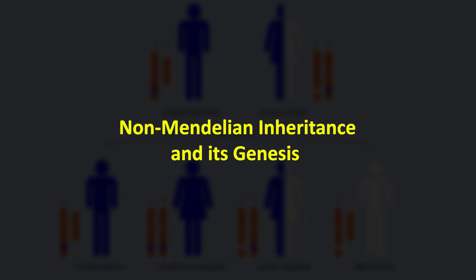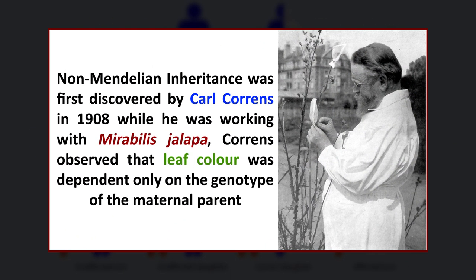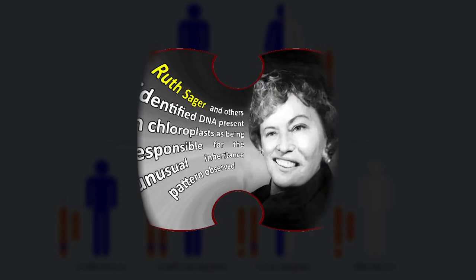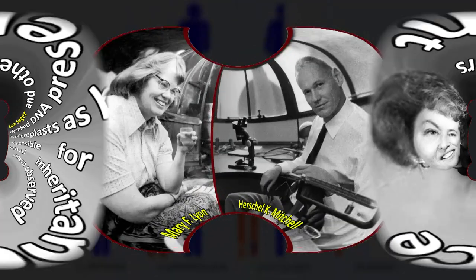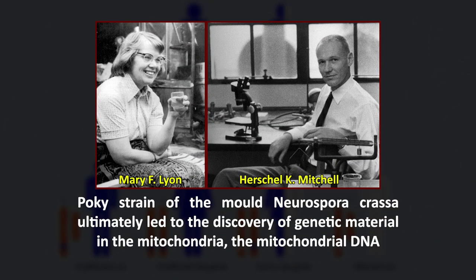Let's now discuss the genesis of non-Mendelian inheritance. Non-Mendelian inheritance was first discovered by Carl Correns in 1908 while he was working with the Mirabilis jalapa plant. Correns observed that leaf color was dependent only on the genotype of the maternal parent. Based on these data, he determined that the trait was transmitted through a character present in the cytoplasm of the ovule. Later, Ruth Sager and others identified DNA present in chloroplasts as being responsible for the unusual inheritance pattern. Work by Mary and Herschel Mitchell on the poky strain of the mold Neurospora crassa ultimately led to the discovery of genetic material in the mitochondria — mitochondrial DNA.